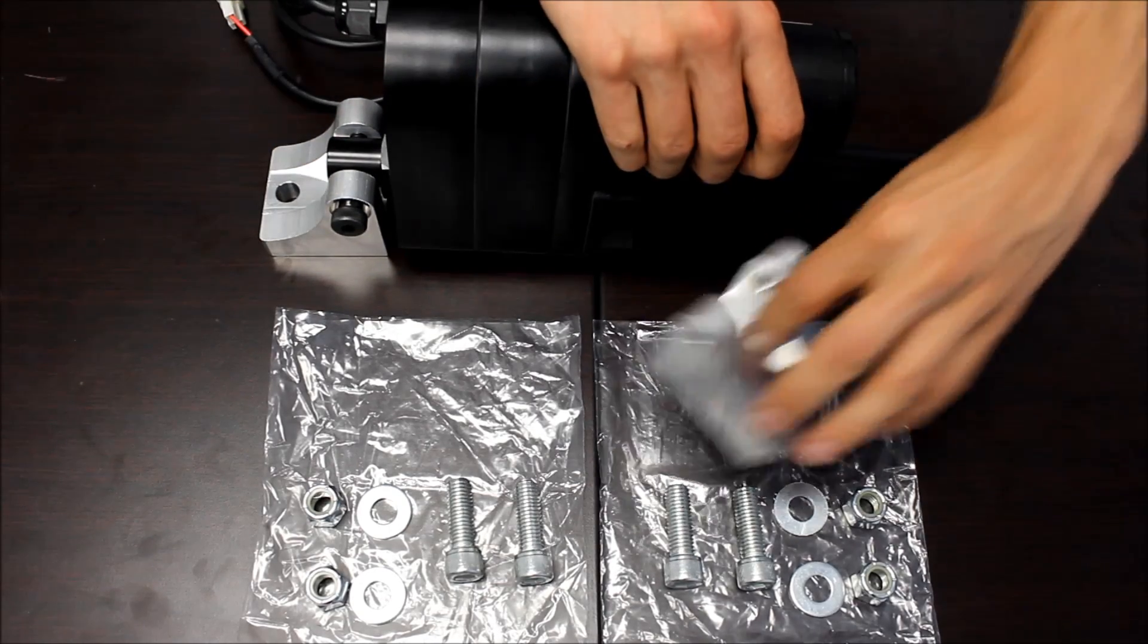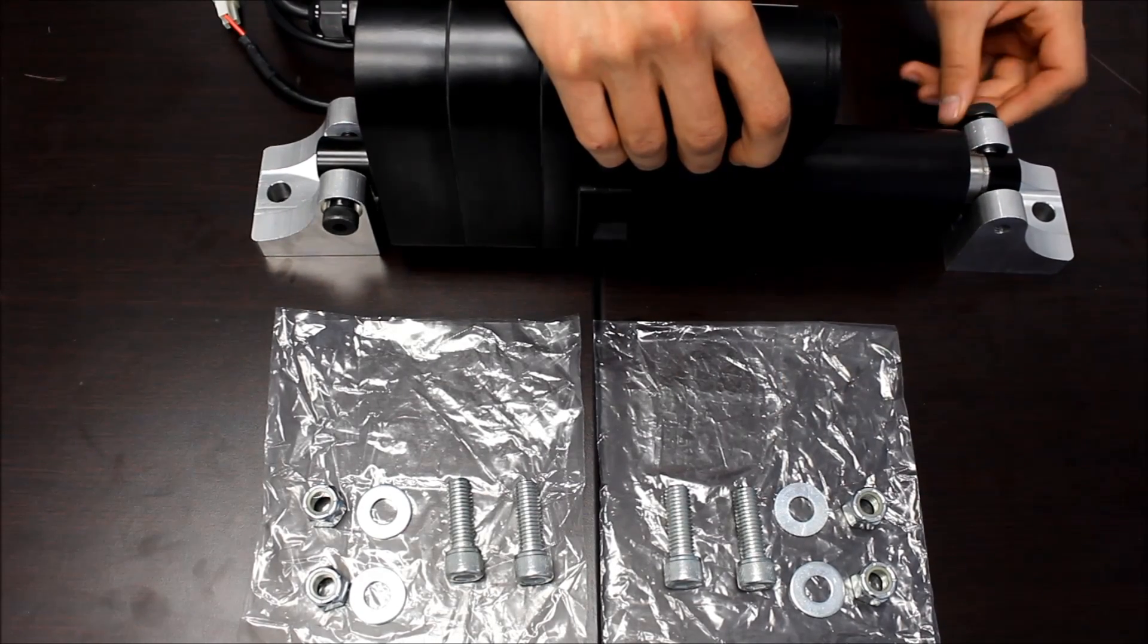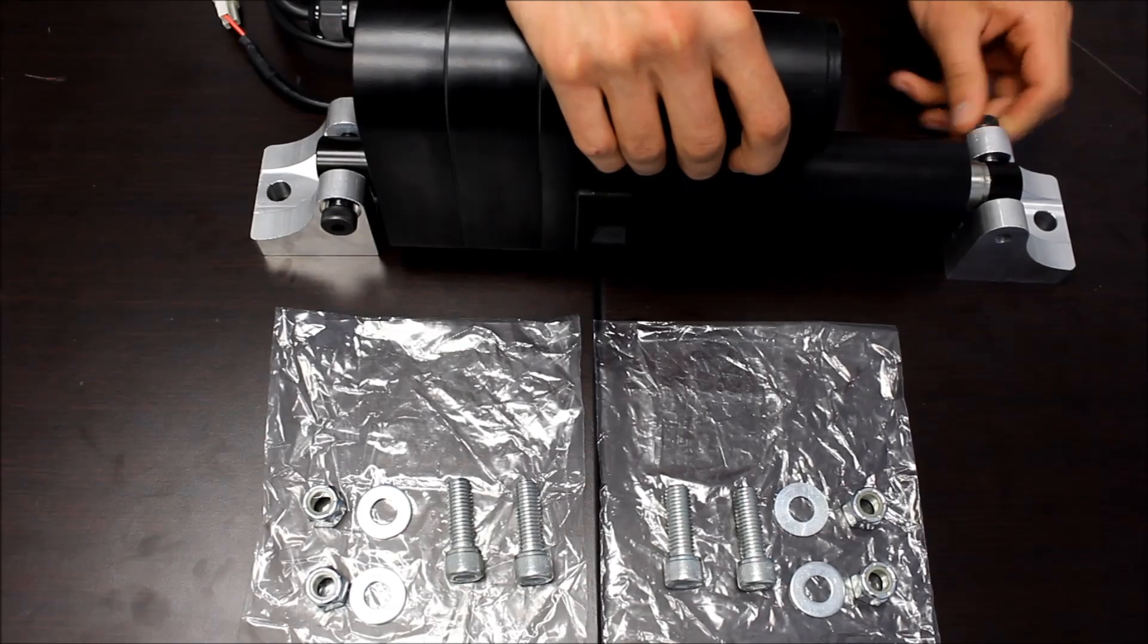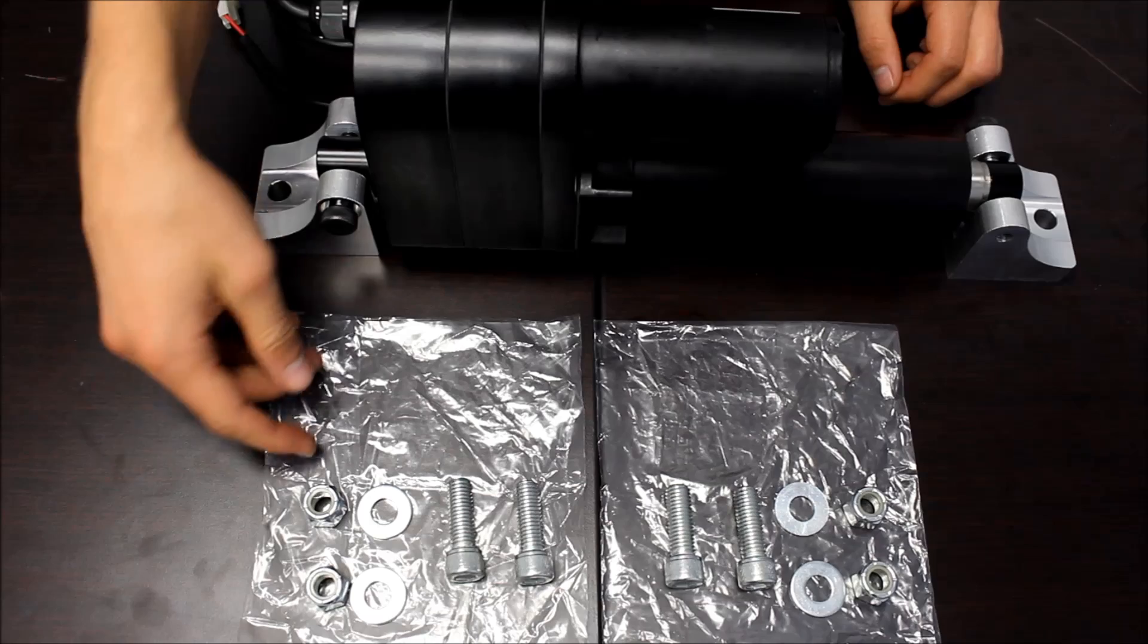They're easy to attach. All you need to do is line up the holes, slide in the pin, and then screw it in until it's tight. The BRK17s include all the necessary hardware for installation.